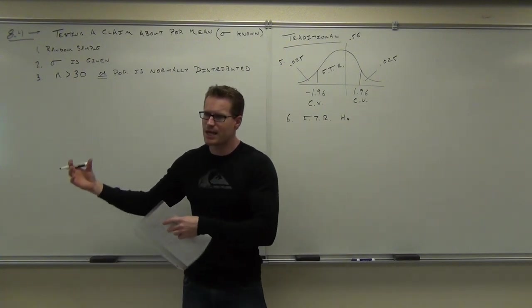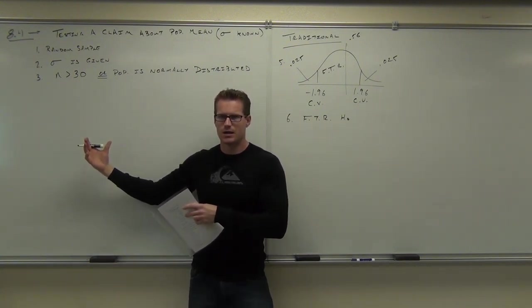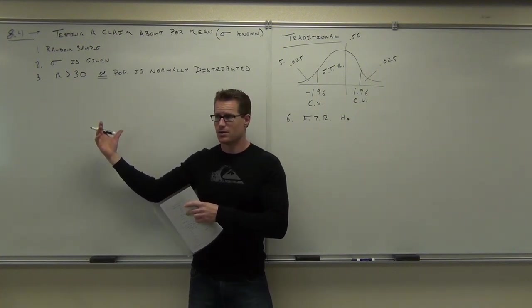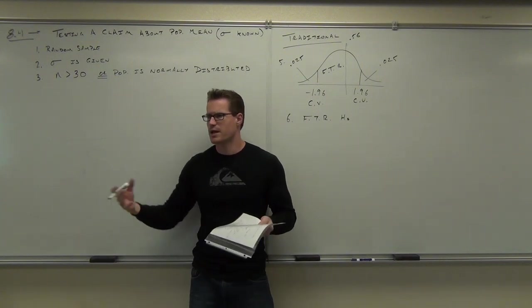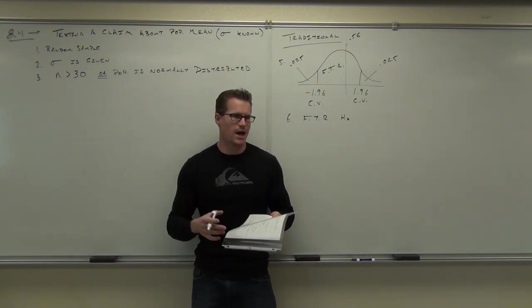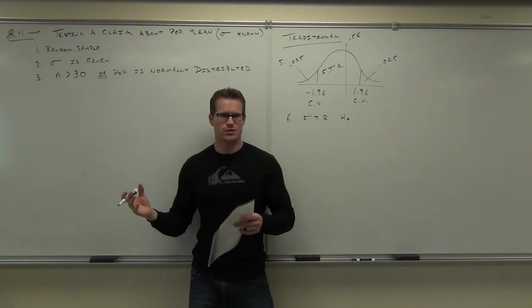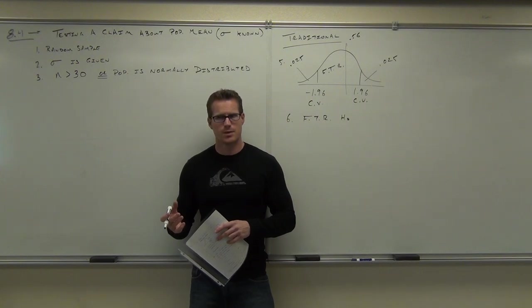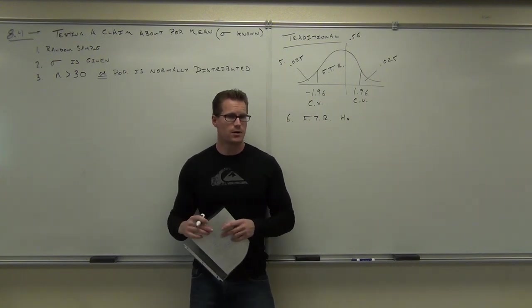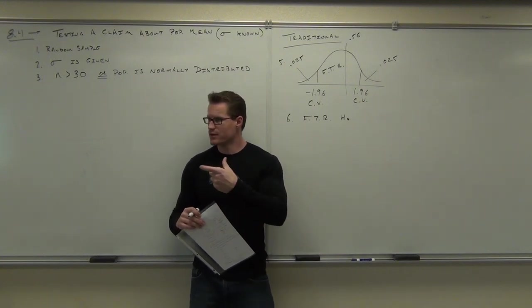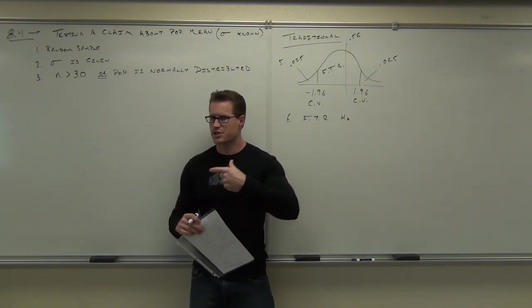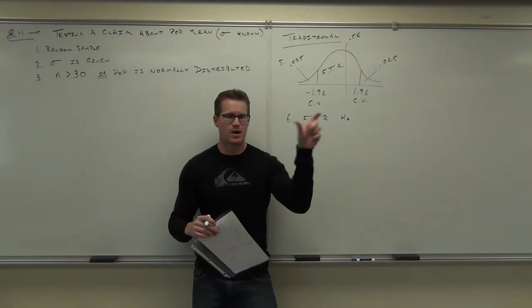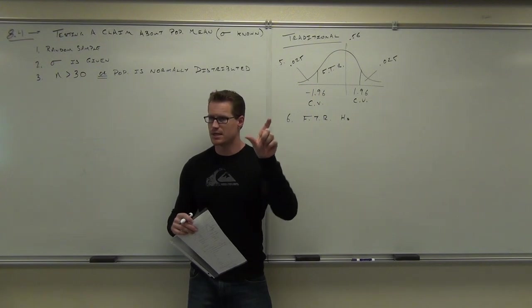Of course, we can't have any p-hat, right? Because p-hat stands for proportion. So if we're not talking about proportions, you're not going to have a p-hat. What are we going to have if we're talking about means? We're going to have a mu. What's mu stand for? Population mean. What else are we going to have? X-bar. What's X-bar stand for? Sample mean. That's going to be our evidence that we're going to try to overturn a statement about mu with.